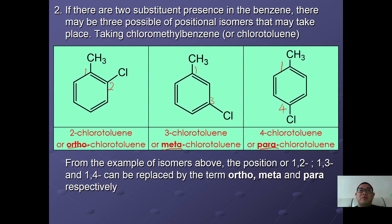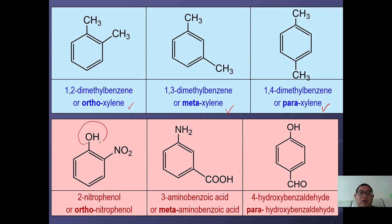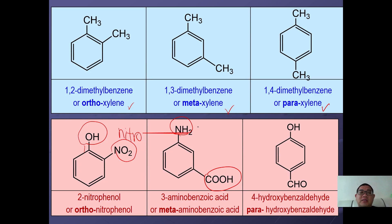So positions 1,2; 1,3; and 1,4 can be replaced by the prefixes ortho, meta, and para. For example, 1,2-dimethylbenzene is also called ortho-xylene; 1,3-dimethylbenzene is meta-xylene; and 1,4-dimethylbenzene is para-xylene. When comparing OH and NO2, since OH has a common name it acts as the functional group and becomes carbon number one, while NO2 is named as the substituent nitro. So the compound is called 2-nitrophenol or simply ortho-nitrophenol.